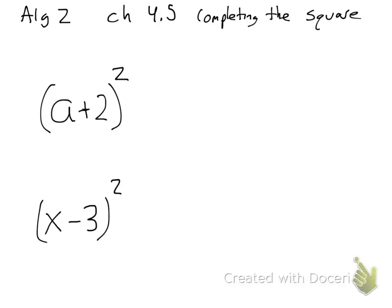Okay, Algebra 2, this is 4.5. This is completing the square. So what we're going to do is start off with this idea of what is a perfect square.